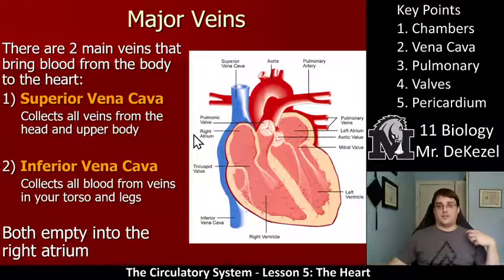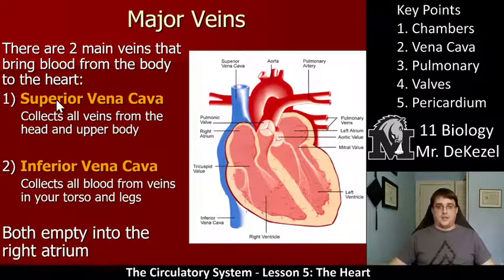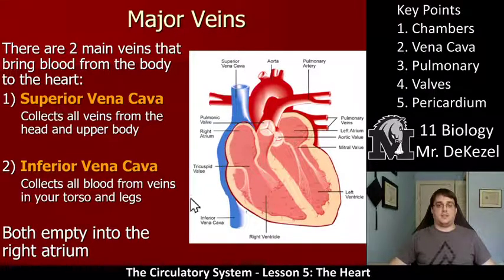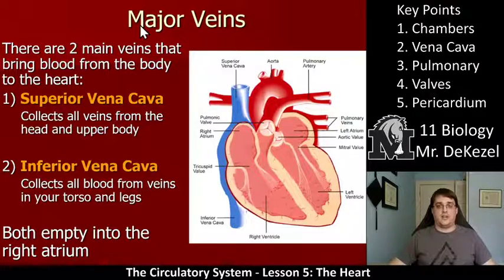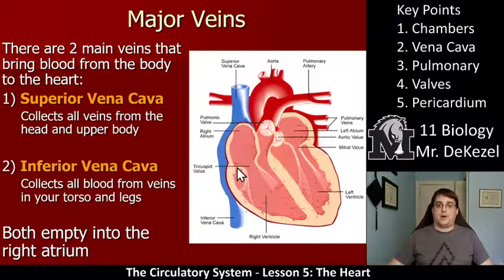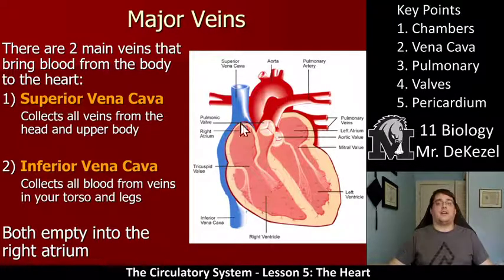How does blood enter the heart at all? There are two major veins that bring blood from the body to the heart. This is the superior vena cava, which is the upper portion, and the inferior vena cava, which is the bottom portion — going from the torso and legs. The superior and inferior vena cava bring all the blood into the right atrium. I know it's the left side of the picture, but it is the right atrium. These vessels empty into the right atrium.